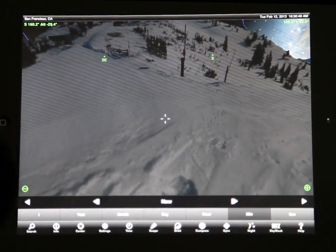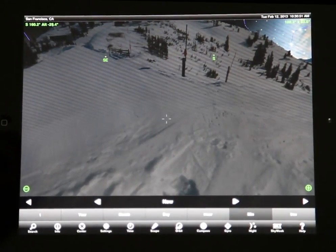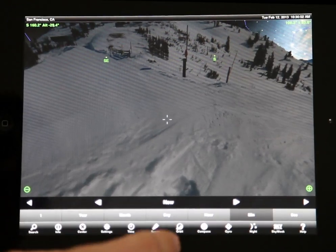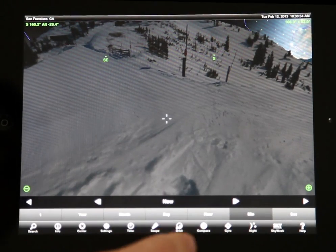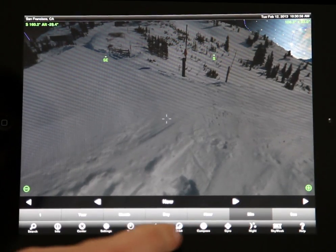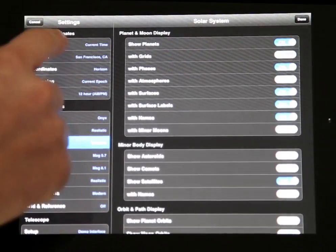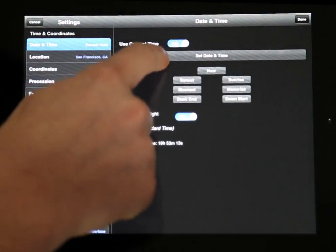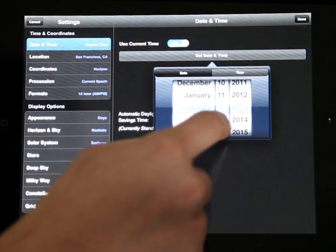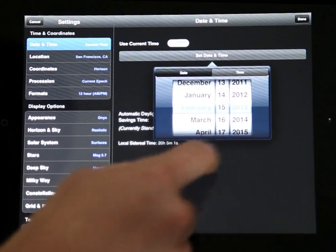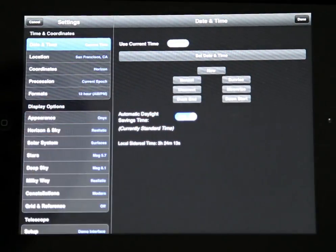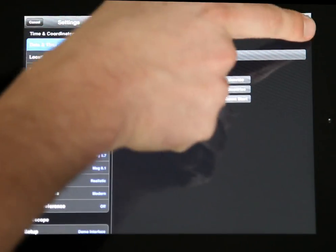Well, right now that asteroid is under the south pole of the Earth, so from our location it's underground. But let's move ahead to the day of the flyby, which is February 15th. So I'm going to go to our settings, date and time, and pick February 15th. And let's pick right around sunset, since that's when you can start observing it.